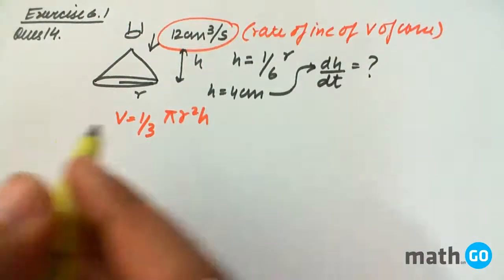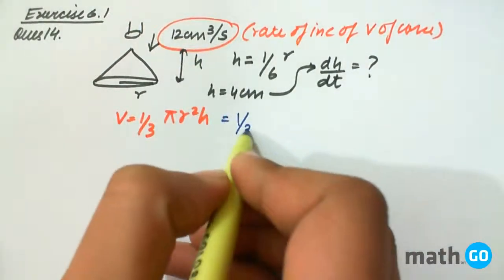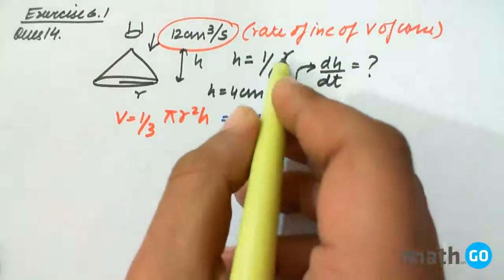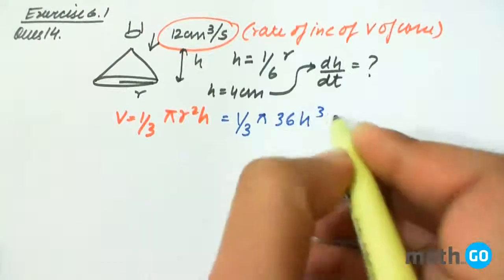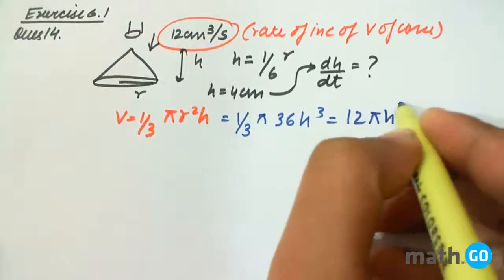Converting it completely into h, we get it as 1 by 3 into pi into r. R is 6h so 36 h cube. That is nothing but 12 pi h cube.